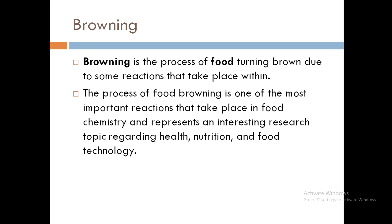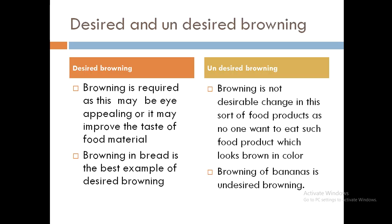We come across two terms when we deal with the Browning Reactions: desirable browning and undesirable browning. Browning which is necessary for the food we are preparing is called desirable browning. Whereas browning which is not necessary for the type of food when it is undergoing processing or cooking is known as undesirable browning. For example, bread comes under desirable browning — we all need bread which is well baked and brown in color. No one consumes bread that is white or excessively dark, but a properly baked brown bread is liked by everyone.